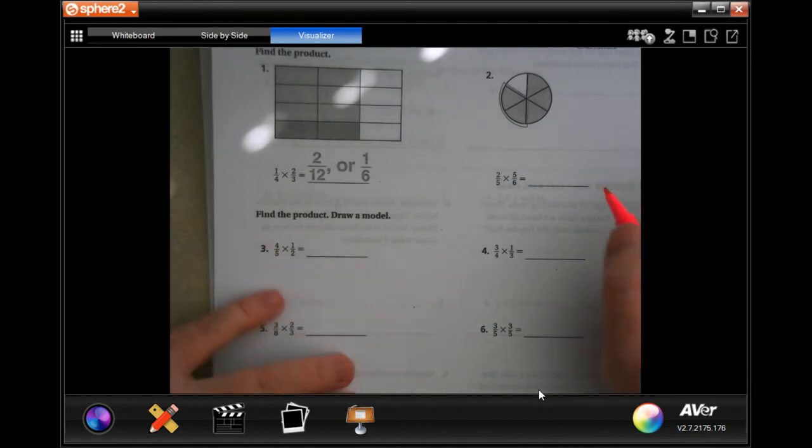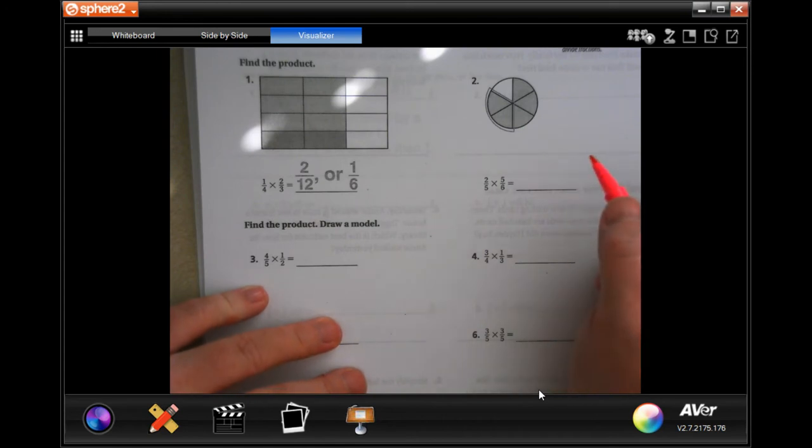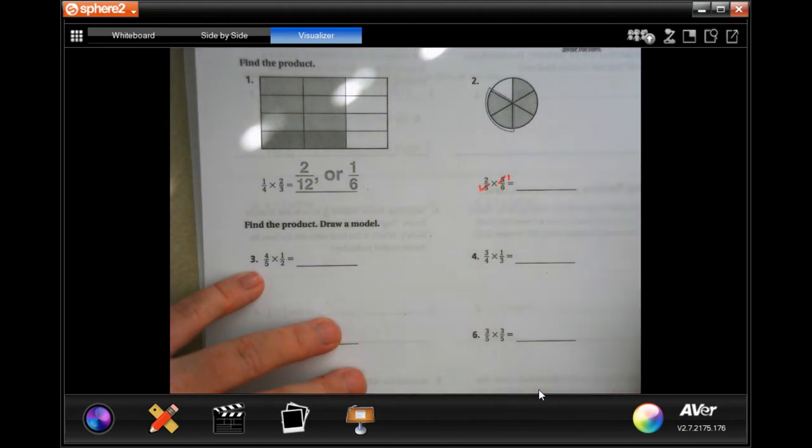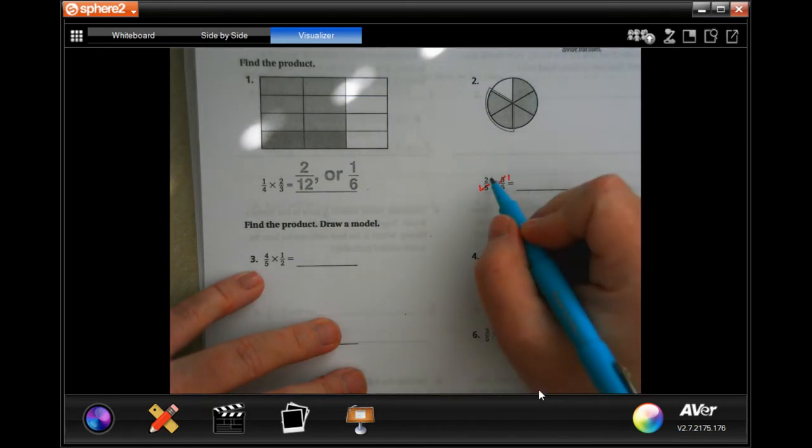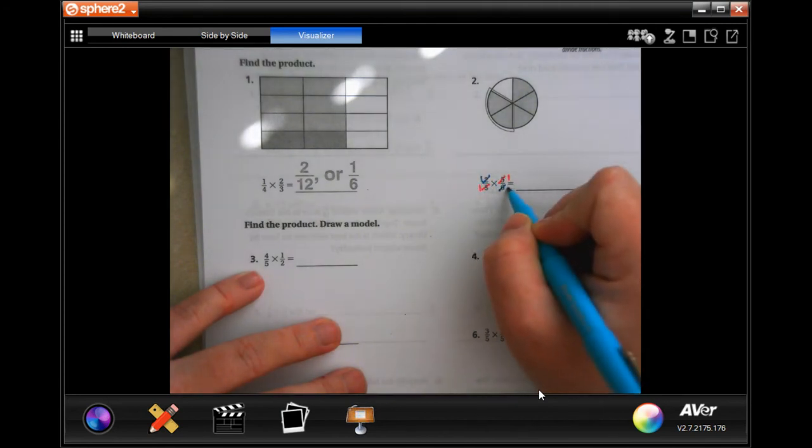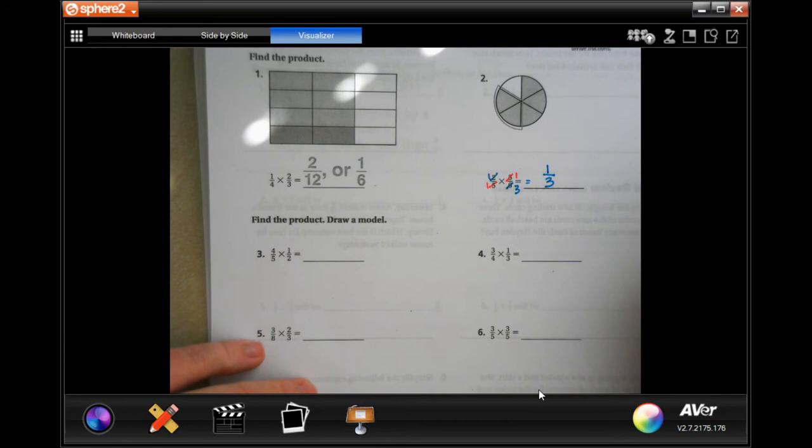We are going to go in and cross-cancel and then multiply straight across. We're not going to use the models, we're going to just do the math. I see two numbers, a top and a bottom, that are identical, so I can cross them out and just put a 1. Now, on the other hand, we can still do 2 and 6. So, 2 goes into 2 once, 2 goes into 6 three times. So now, I have 1 times 1, which is 1, and I have 1 times 3, which is 3. Done.